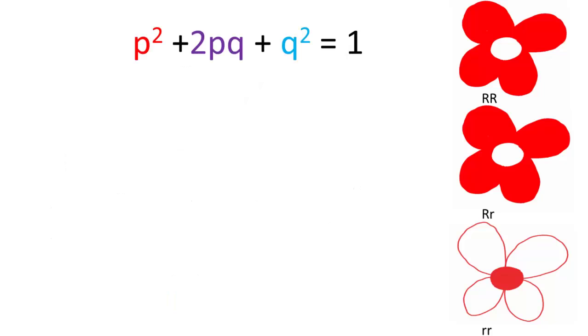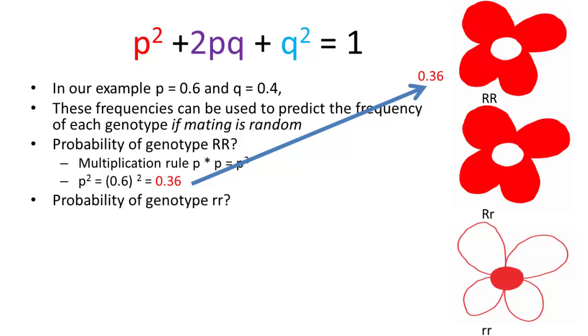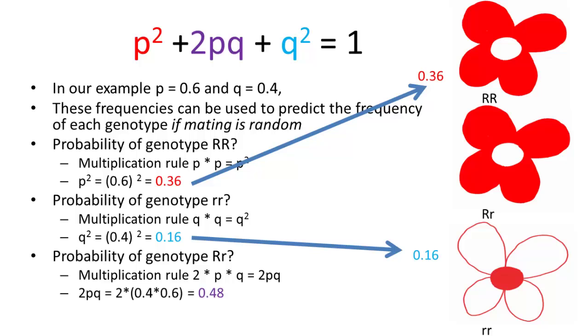On the other hand, these frequencies can be used to predict the frequency of each genotype if mating is random. We can take the probability of having big R big R by squaring p, and the same thing for little r little r by squaring q. And then 2pq—2 times p times q—is going to be our genotype for big R little r.